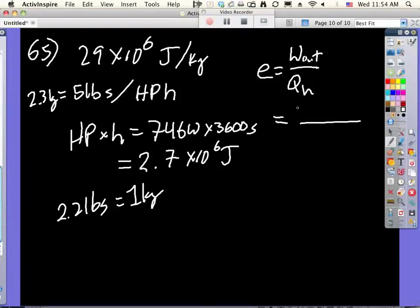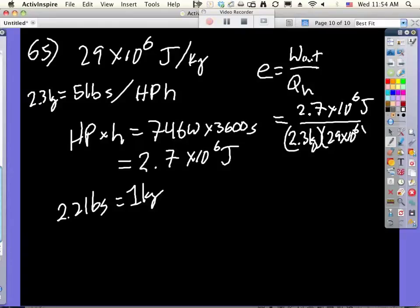The work out should have been, this is what we got: 2.7 times 10 to the 6th joules. How much energy do we put in? 2.3 kilograms times 29 times 10 to the 6th joules. So that 10 to the 6th is going to cancel with that 10 to the 6th, and we get 2.7 divided by 2.3 times 29. What do you get?